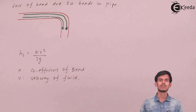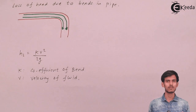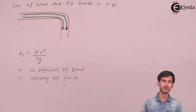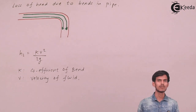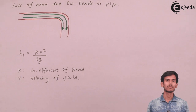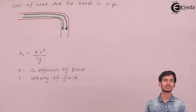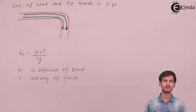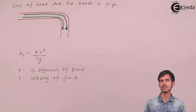So we have seen all the types of losses. The major loss is due to friction and is the largest contributor to total energy loss.